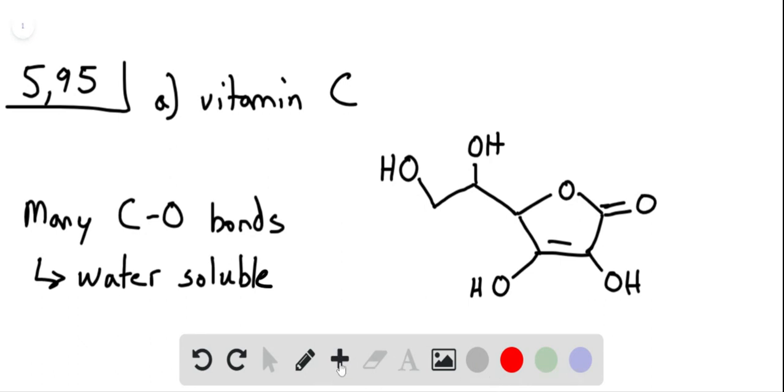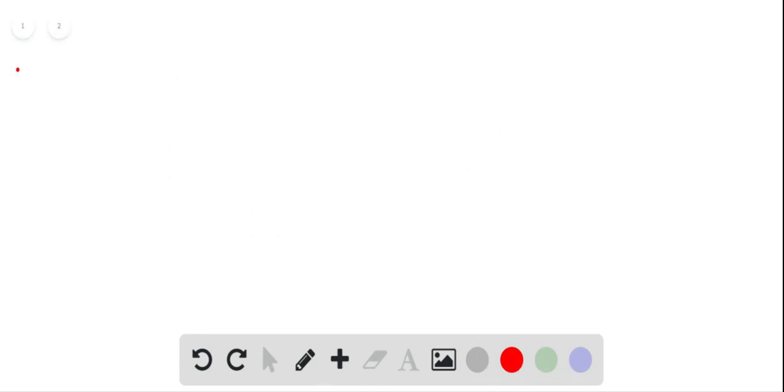We can look at part B where we're given vitamin A. We have a bigger structure here. First we have a cyclohexene, and then we can draw 1, 2, 3, 4, 5, 6, 7, 8, 9 carbons.